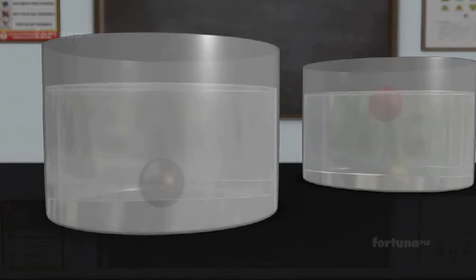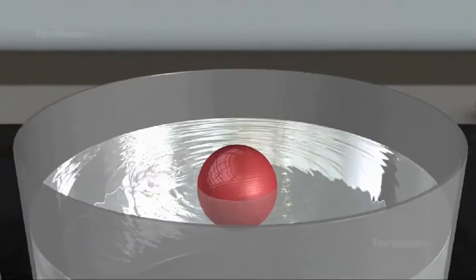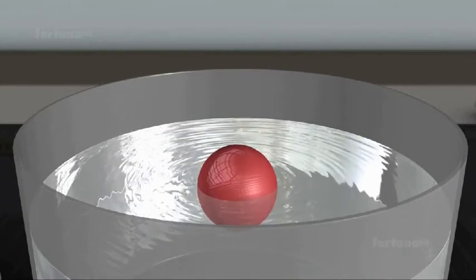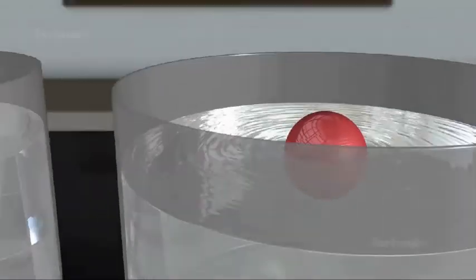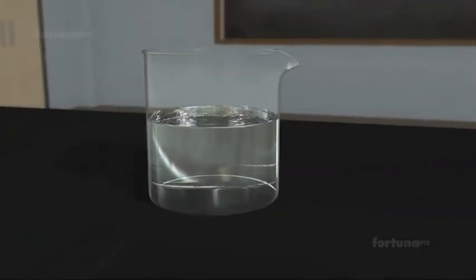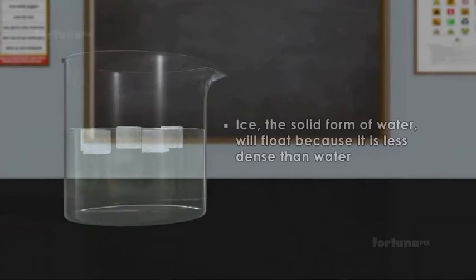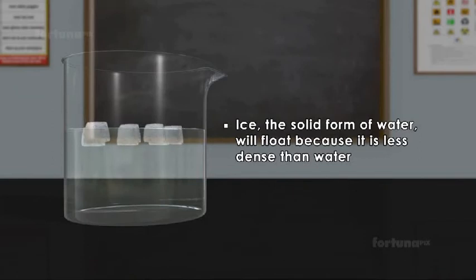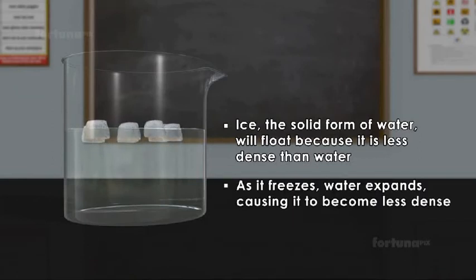Objects with a density of more than one will sink in water. From what we already have seen, the rubber ball will have a density that is less than one, while the iron ball will have a density greater than one. Interestingly, ice, the solid form of water, will float because it is less dense than water. As it freezes, water expands, causing it to become less dense.